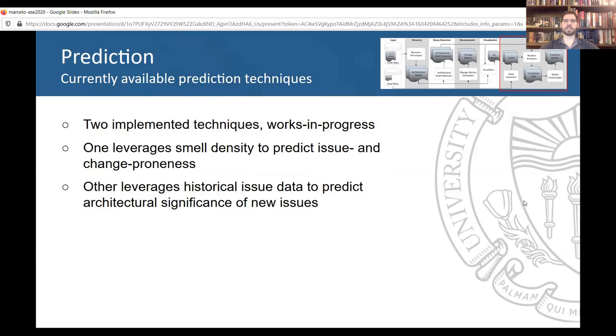Arcade currently implements two prediction techniques, which are works in progress with solid preliminary results. The first one leverages historical smell density to predict issue and change proneness of individual implementation artifacts. The second leverages historical data from issues to predict the architectural significance of new issues and allow the engineers to understand what kinds of efforts might be needed to resolve them.